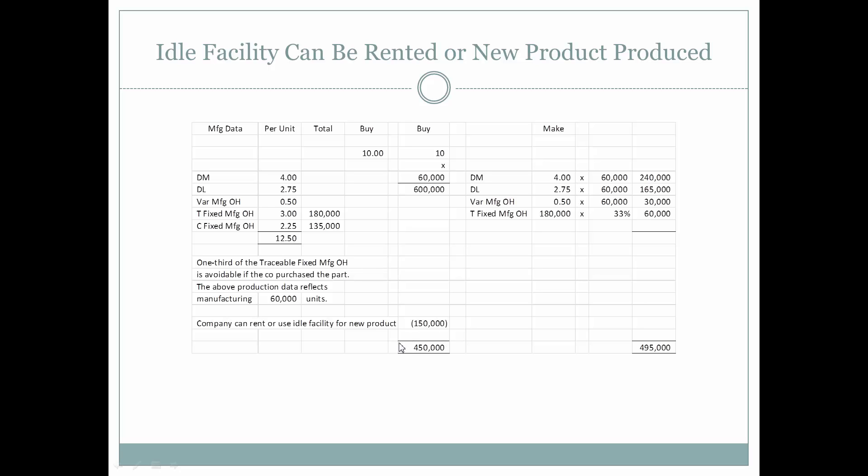However, if our ability to rent the facility yielded $150,000 as opposed to $50,000, now it would be cheaper to buy the part rather than make it.